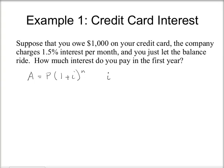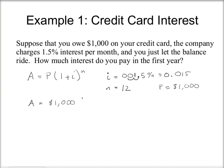We're going to use the formula A = P times (1 + I) to the N. In this case, I is your monthly interest rate, which is 1.5%. Converting to decimal form by moving the decimal place two places to the left gives 0.015. N is the number of compounding periods — it's compounded every month, and you keep your balance for one year, so N equals 12. The amount owed at the end of the year is $1,000 times (1 + 0.015) to the power of 12, which gives $1,195.62.